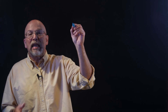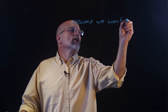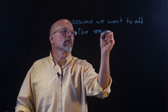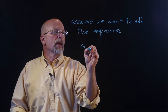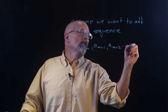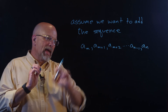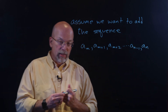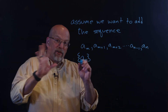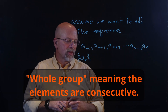Assume we want to do the addition — assume we want to add the sequence: a sub m, and a sub m plus one, and a sub m plus two, all the way up to a sub n minus one, to a sub n. So we've got this sequence from a sub m all the way up to a sub n, where a is representative of an element in the sequence. Somewhere in this sequence, we want to take a whole group of them and add them together.